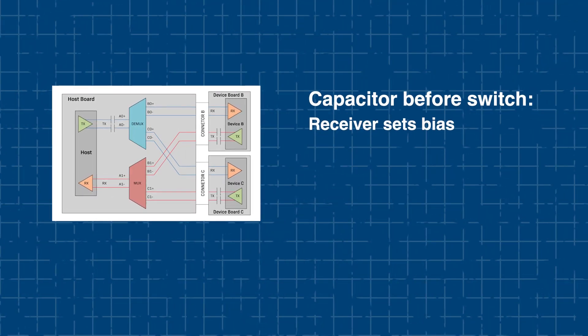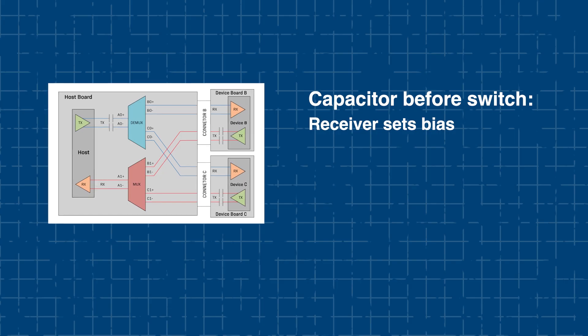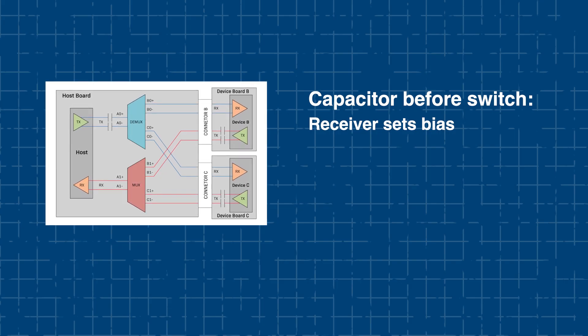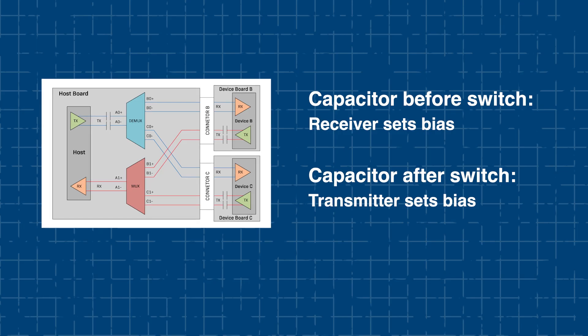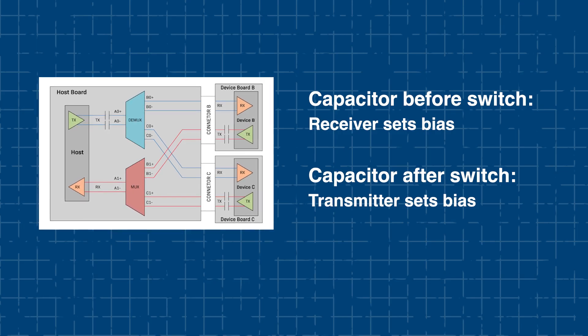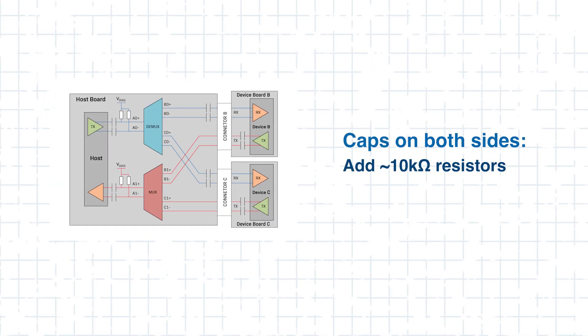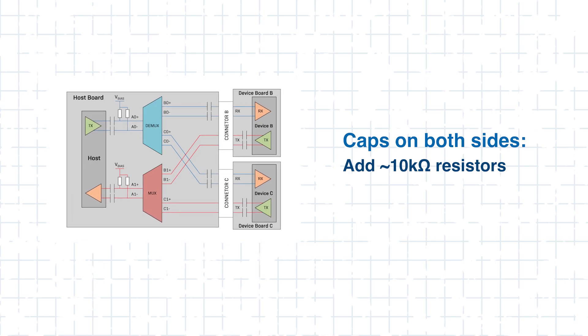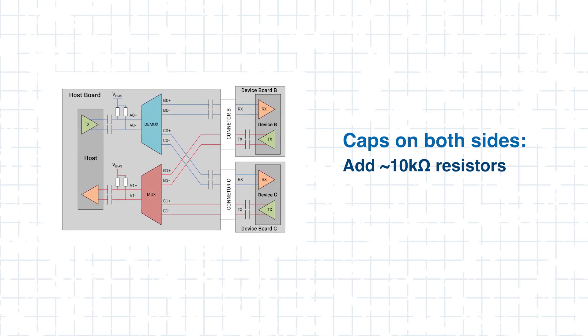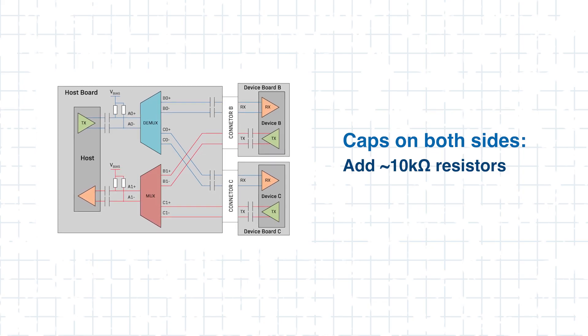Placing capacitors between the transmitter and the switch allows the receiver side to define the switch's common mode voltage, while capacitors placed between the switch and receiver allow the transmitter to set the bias. When capacitors are placed on both sides of the switch, external pull-up and pull-down resistors are required. These resistors, typically around 10 kilo-ohms, establish a valid DC level at the switch input. Selecting the right configuration ensures signal integrity and reliable operation of the differential link through the bus switch.